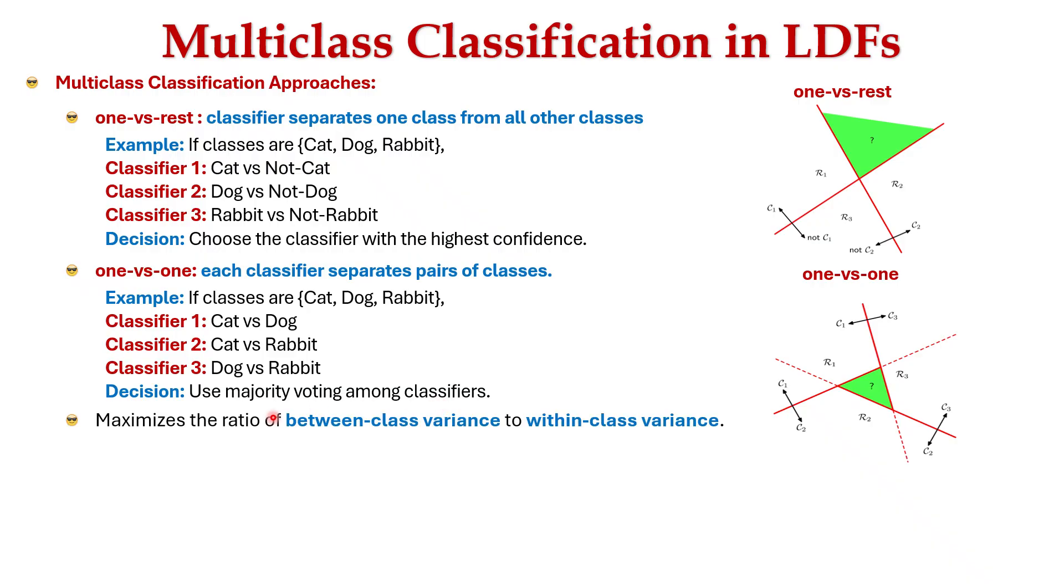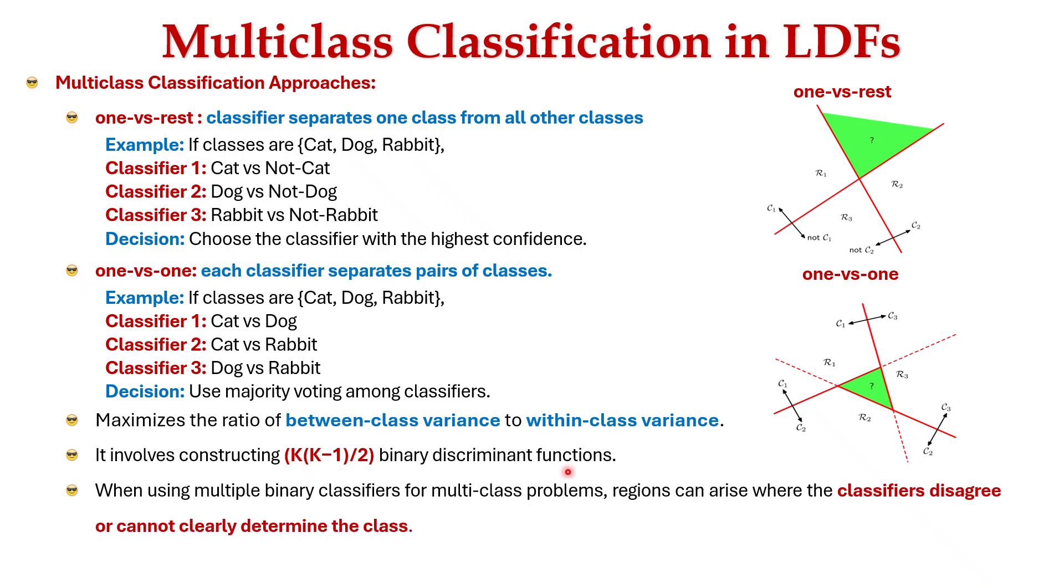Multi-class classification maximizes the ratio of between class variance to within class variance. It involves constructing k(k-1)/2 binary discriminant functions. When using multiple binary classifiers for multi-class problems, regions can arise where the classifiers disagree or cannot clearly determine the classes. These ambiguous regions are represented by green areas in the figure given here.